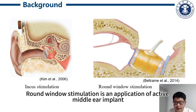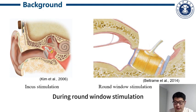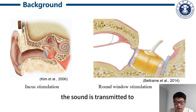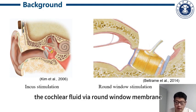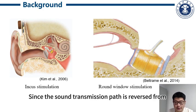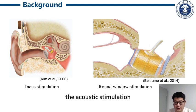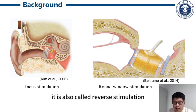Round window stimulation is an application of active middle ear implant. During round window stimulation, the sound is transmitted to the cochlear fluid via round window membrane. Since the sound transmission path is reversed from acoustic stimulation, it is also called reverse stimulation.